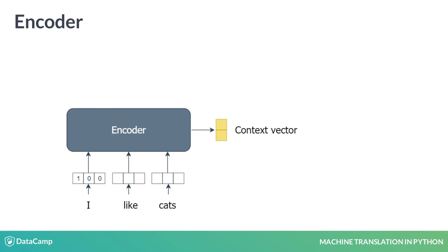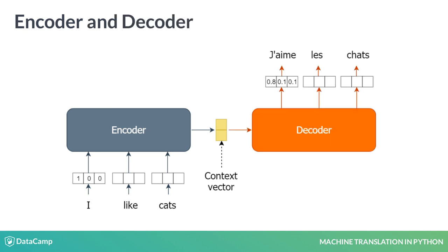Let's first look at the encoder. In our example, the encoder takes in one-hot vectors of English words as inputs and produces a compressed representation of the inputs known as a context vector. Then the decoder consumes the context vector as an input and produces probabilistic predictions for each time step. The word for a given time step is selected as the word with the highest probability.